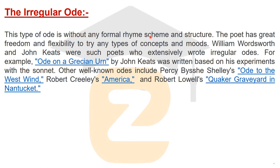William Wordsworth and John Keats were poets who extensively wrote irregular ode. For example, John Keats's 'Ode on a Grecian Urn' is based on experiments with the sonnet and other well-known odes. Percy Bysshe Shelley's 'Ode to the West Wind' also comes under the category of irregular ode. Robert Lowell's 'Quaker Graveyard in Nantucket' is another example of irregular ode.